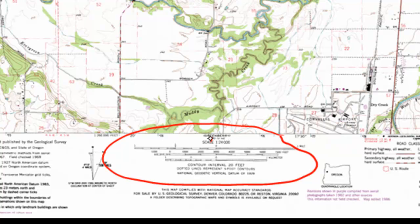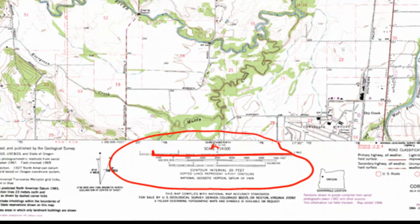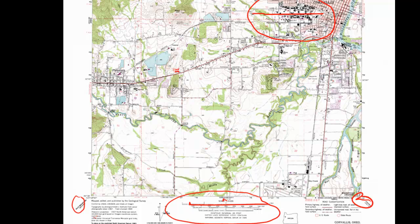Notice that the bar scale has its zero point here in the middle. We have 1 mile to the right of the zero point and 1 mile to the left of the zero point, but to the left that mile is divided into tenths. So, 1.5 inches starting here, measuring across — that's 1.5 inches.